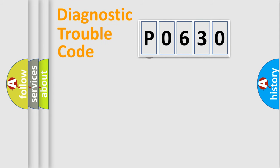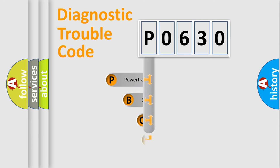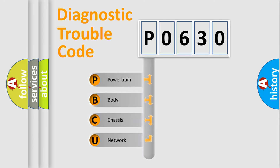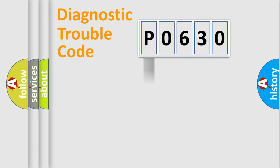First, let's look at the history of diagnostic fault code composition according to the OBD2 protocol, which is unified for all automakers since 2000. We divide the electric system of an automobile into four basic units: Powertrain, Body, Chassis, and Network. This distribution is defined in the first character of the code.